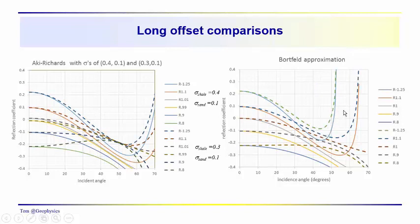This long offset response does indicate a significant rise for the same terms, 0.3, 0.1, and 0.4, 0.1, but to a different degree depending on which approximation you're using.